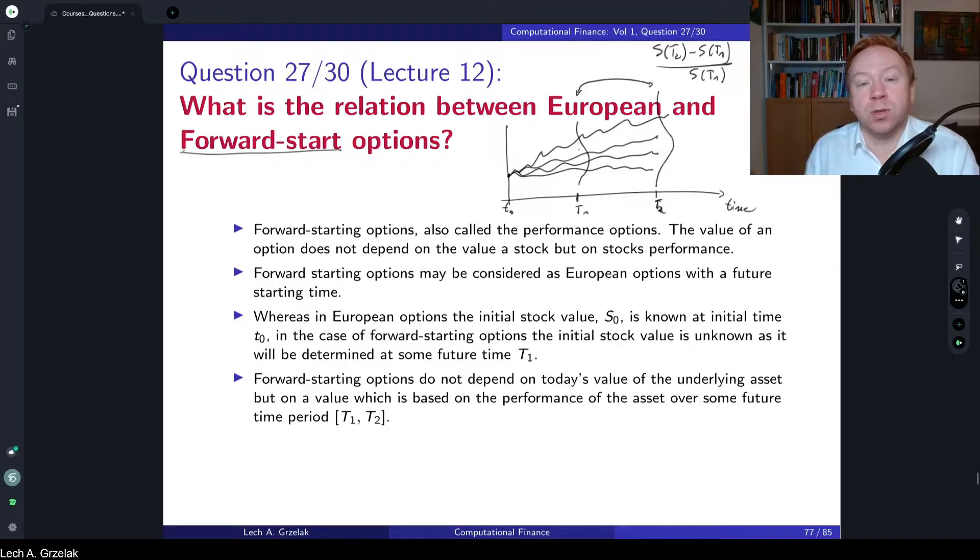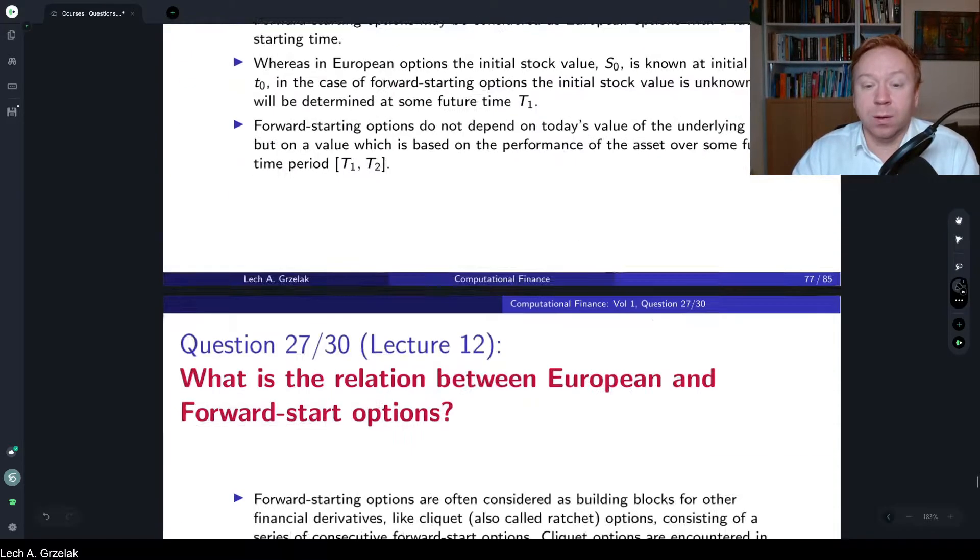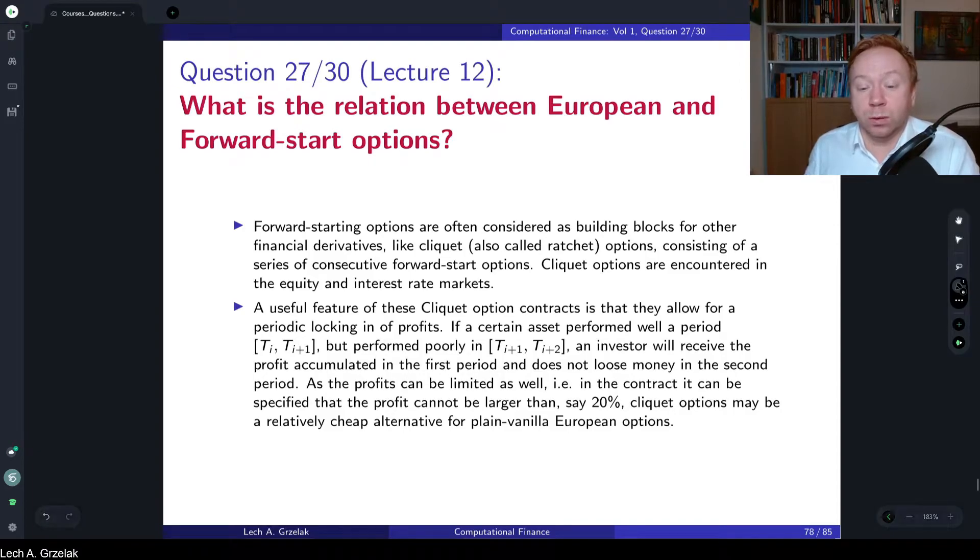Those type of options are important especially in the case of considering exotic derivatives, like cliquet and rachet options, where this kind of performance analysis is a very important binding block for those more exotic derivatives. So this is actually what is mentioned here, those performances that we have just seen. For example, what we can do is build an exotic derivative.